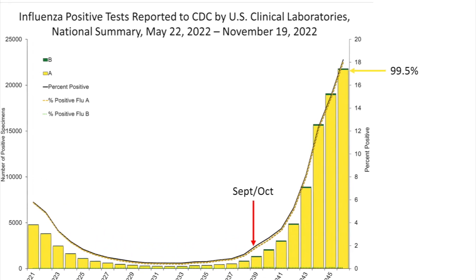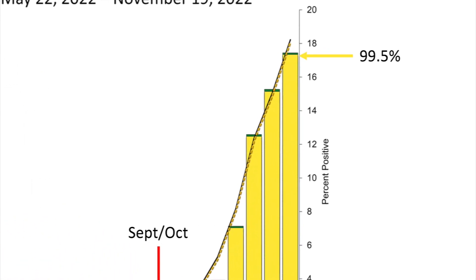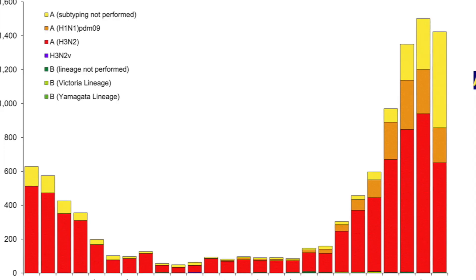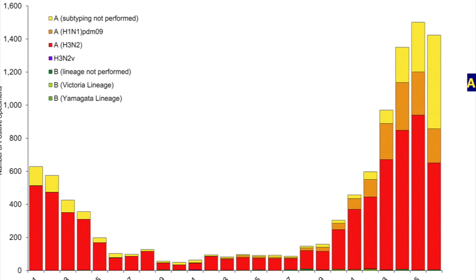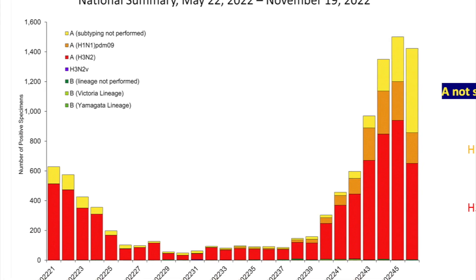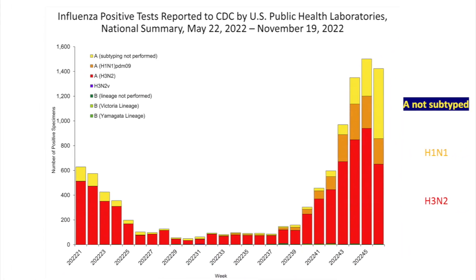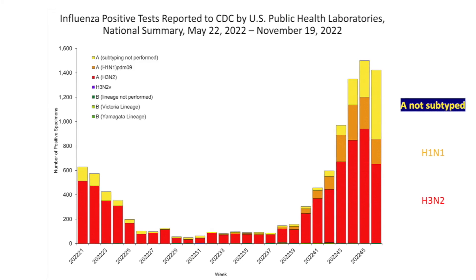Looking at what subtype is driving the flu season, 99.5% of the virus is influenza A, with only 0.5% influenza B. Of the influenza A cases, it's mostly H3N2 in red, with H1N1 in orange. The Texas map shows most of the state becoming pretty active, particularly in Harris County. We'll find out from Dr. Piedra if H3N2 is covered in this year's flu vaccine.